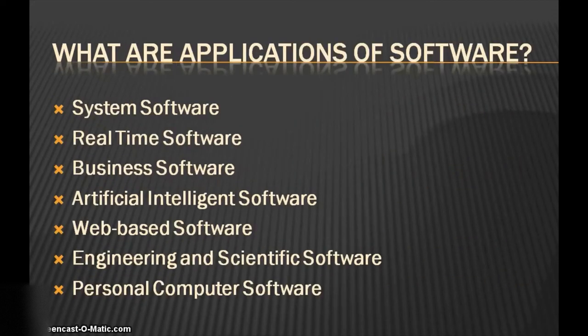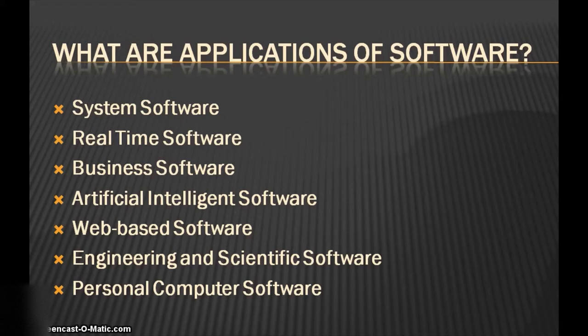We will discuss the different applications of software. First is system software. System software is the software responsible for managing and controlling the operations of a computer system, for example an operating system.